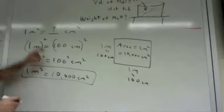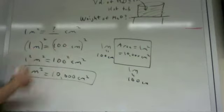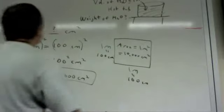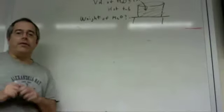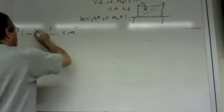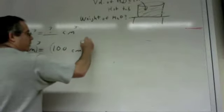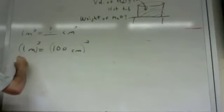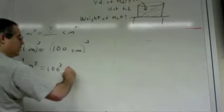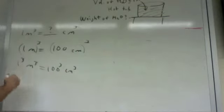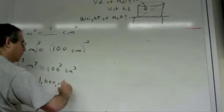Whenever you're doing a unit conversion where something's squared, just do the conversion for the non-squared unit and then square both sides. It works the same way with cubed. For example, one cubic meter equals how many cubic centimeters? You write out one meter equals 100 centimeters and then cube both sides. One meter cubed equals 100 centimeters cubed. Cubing everything inside the parentheses gives one cubic meter equals 100 cubed, which is 100 times 100 times 100 — that's six zeros, or one million cubic centimeters.